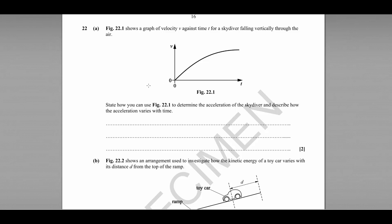Question 22 begins with a velocity time graph for a skydiver falling vertically through the air. It asks us how we could use the figure to determine the acceleration of the skydiver and describe how this acceleration varies with time.